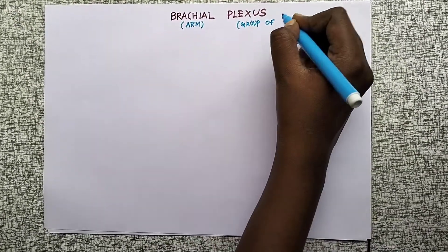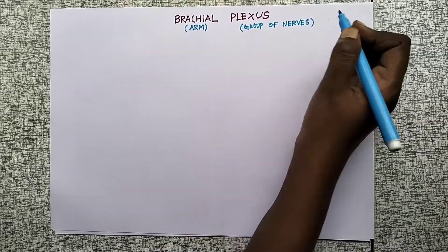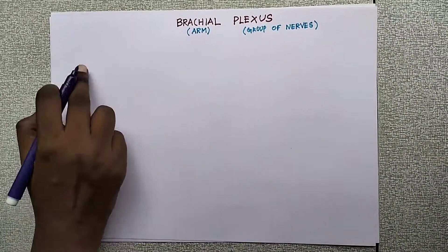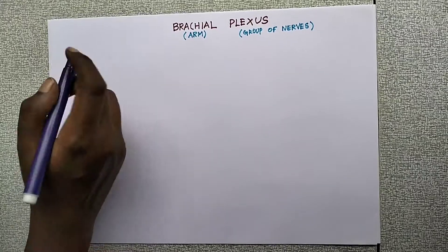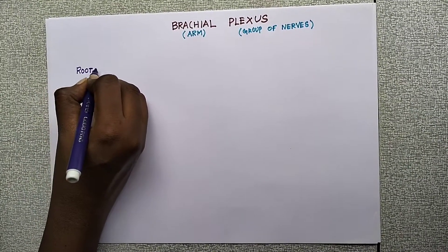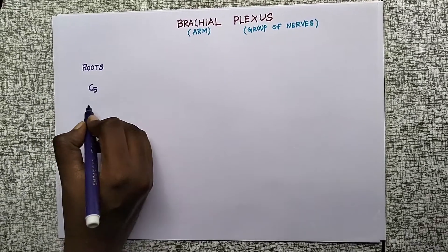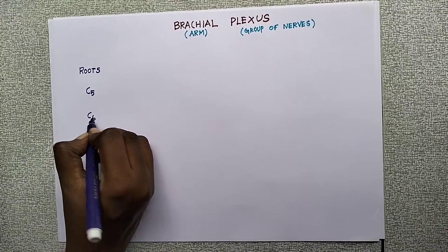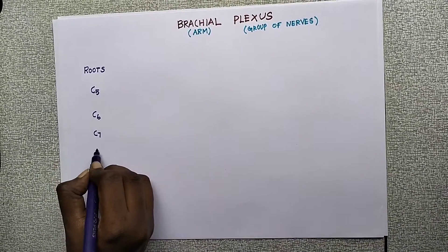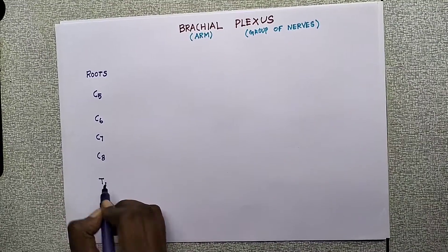The structure has roots, trunks, divisions, and cords. The roots are from the cervical segments: C5, C6, C7, C8, and the first thoracic segment T1.